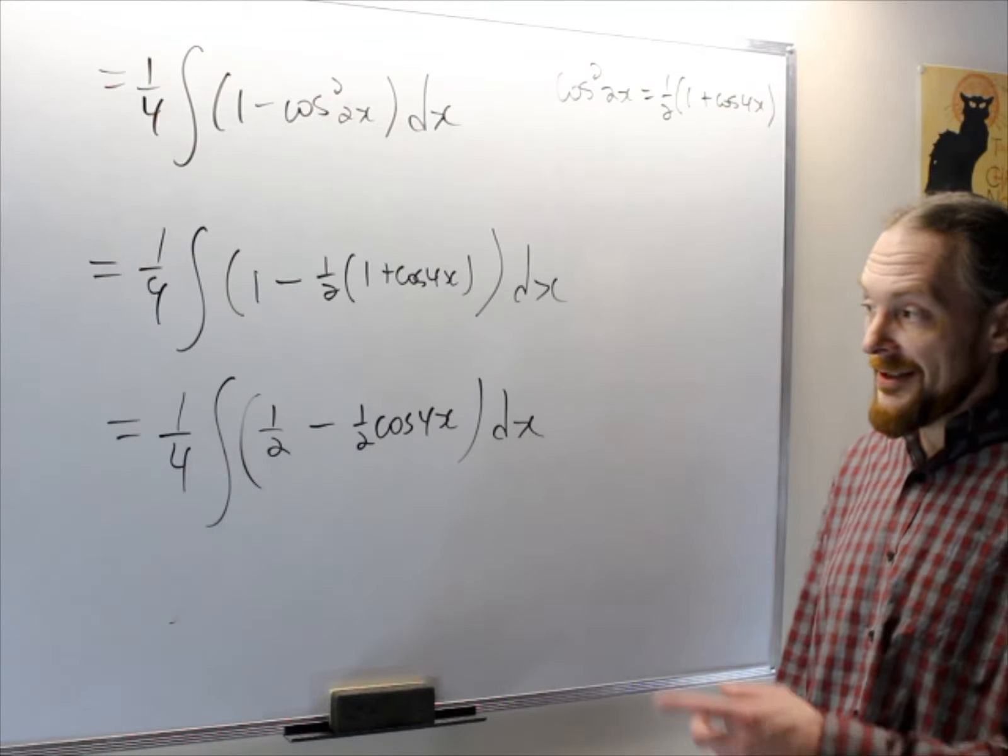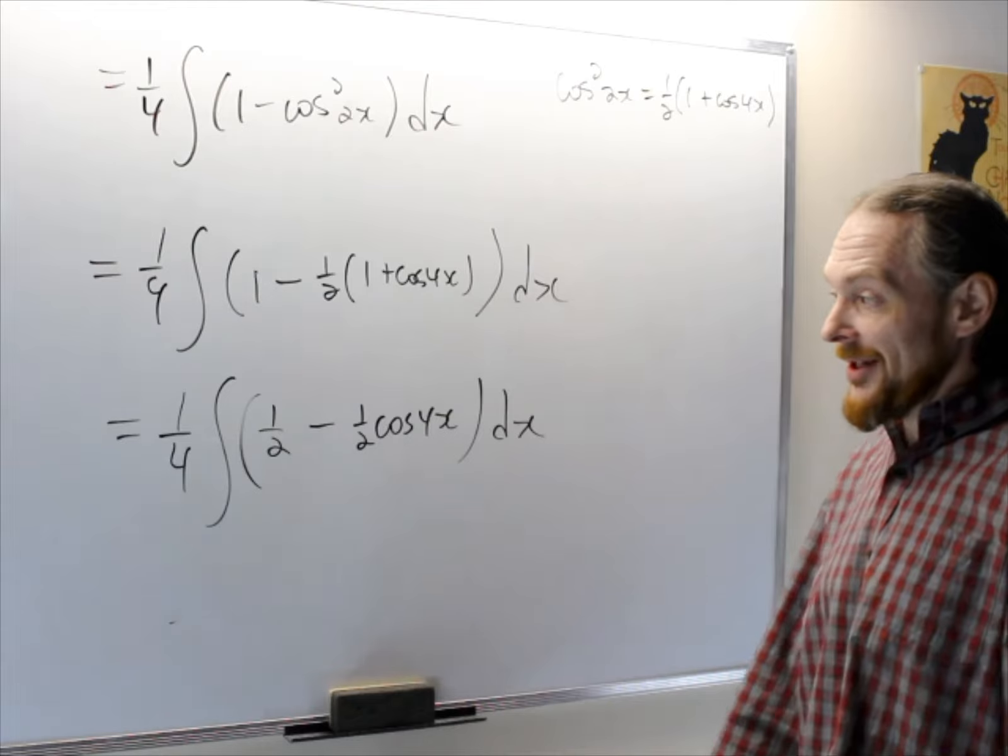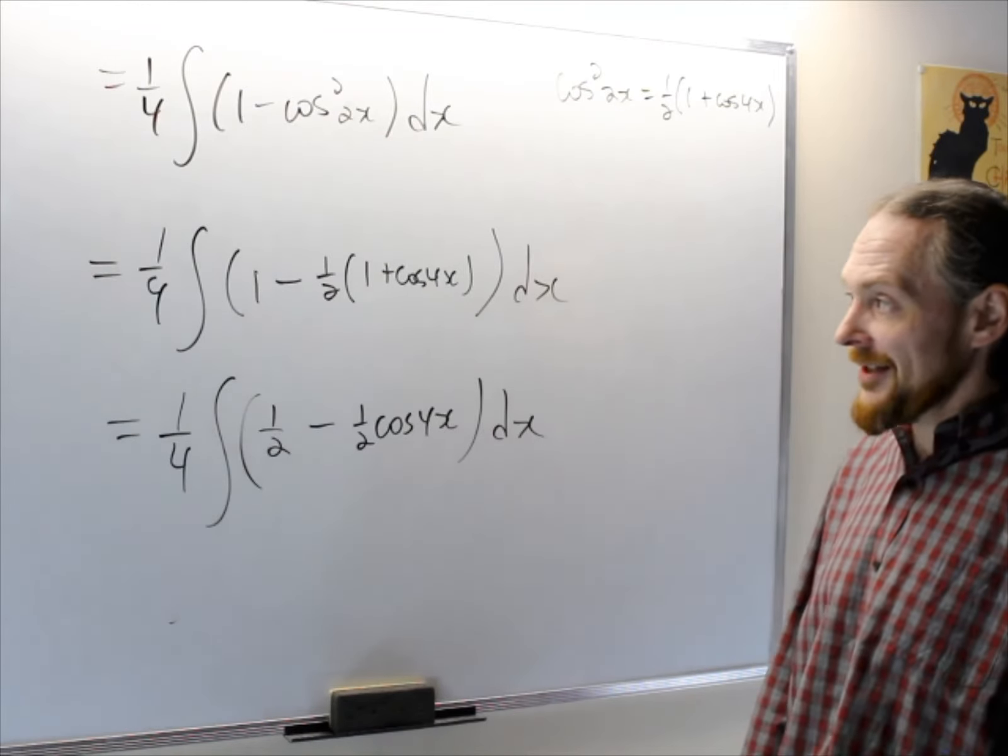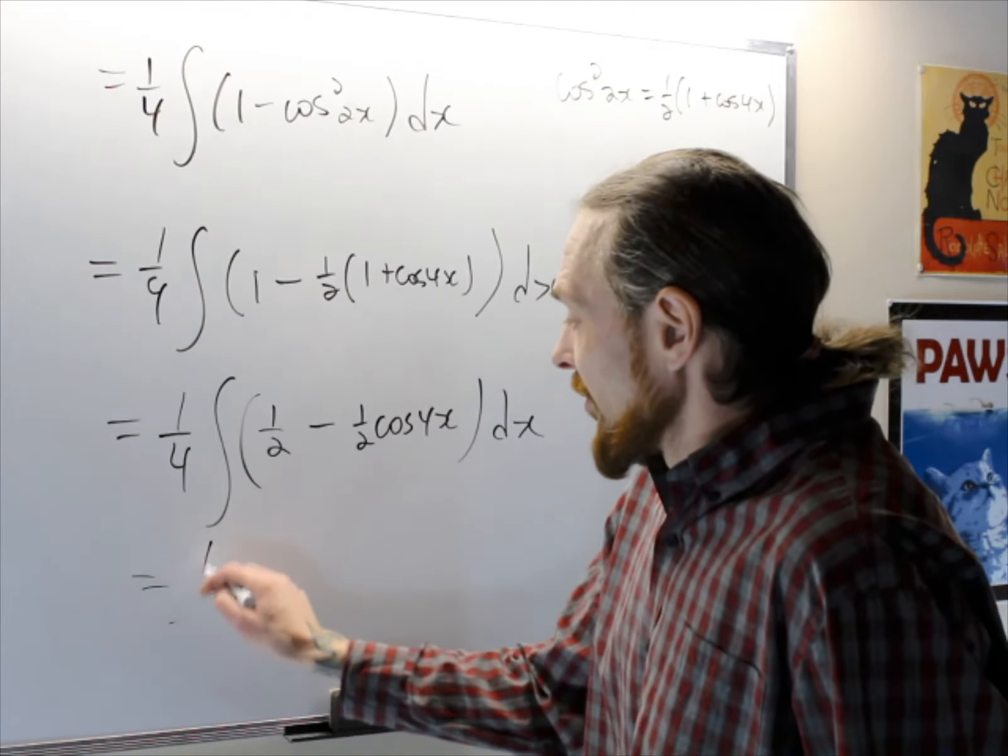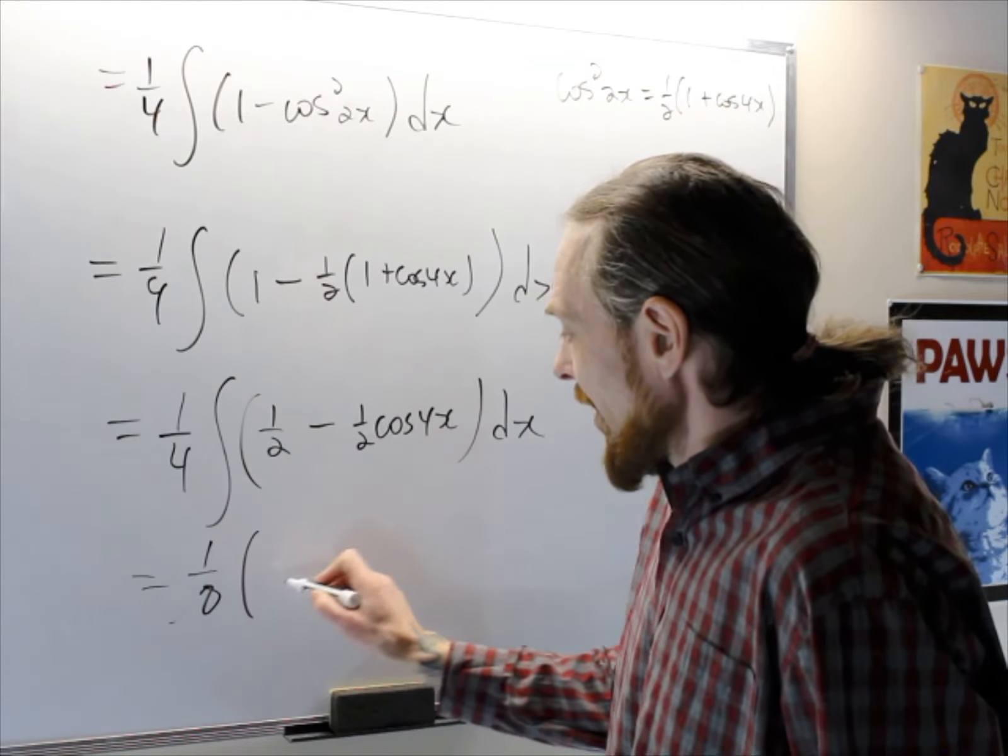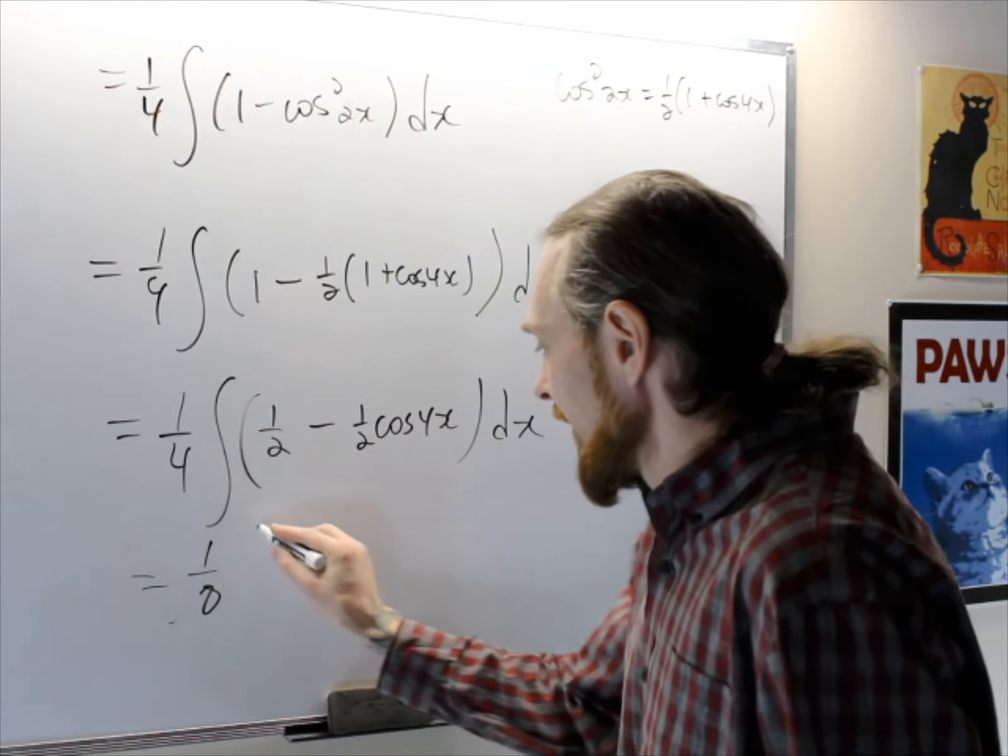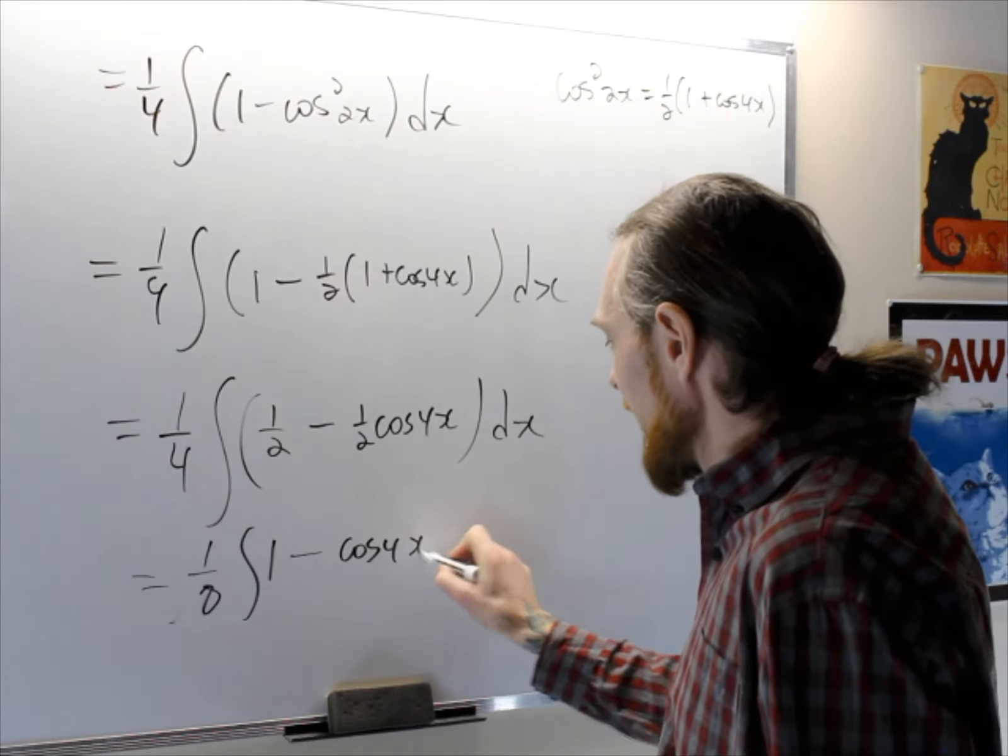If I did that correctly, we'll see, if I didn't, we'll point a stupid arrow at myself for not getting it right, and skipping steps, if you shouldn't do this. So this equals 1 over 8, I can factor the 1 half out, times the integral of 1 minus cos 4x.